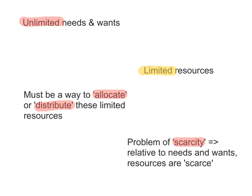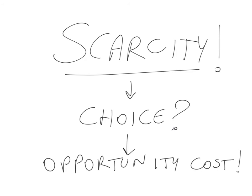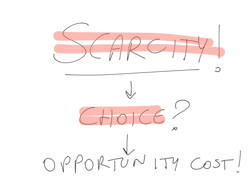Scarcity means that relative to — or when compared to — the needs and wants of people, the resources appear limited, not enough. They appear scarce. Because of the problem of scarcity, not all needs and wants can be satisfied, and therefore there must be choices. Choices need to be made. Whenever a choice is made, the whole idea behind a choice is that you give up something else. What you give up, or the value of the next best alternative foregone, is what economists describe as your opportunity cost.